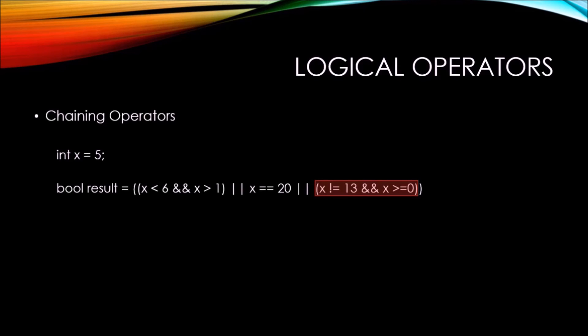We can see, of course, 5 does not equal 13 and 5 is also greater than zero. Since both of those conditions equal true, then this side of the OR operator would also return true.